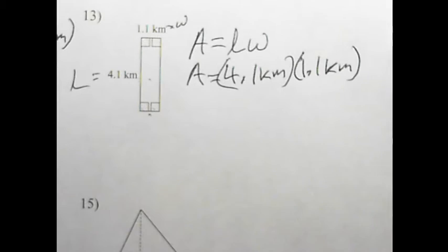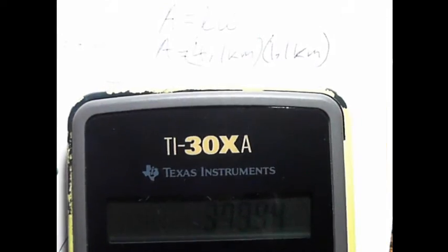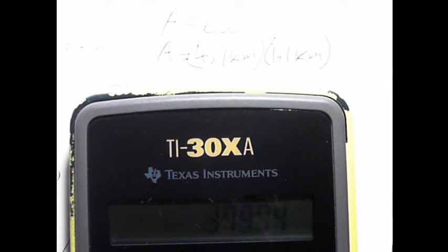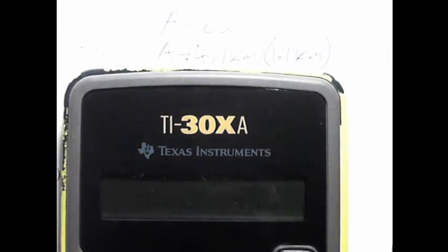And that's it. We're just going to plug that in the calculator. 4.1 times 1.1 equals 4.51.